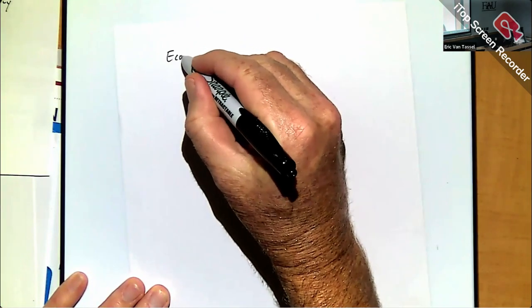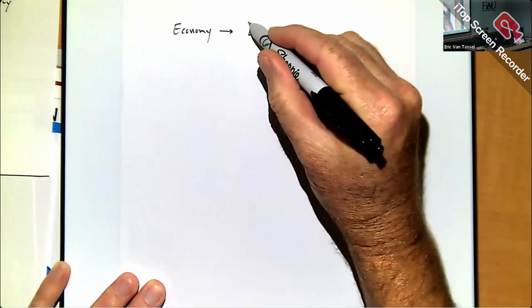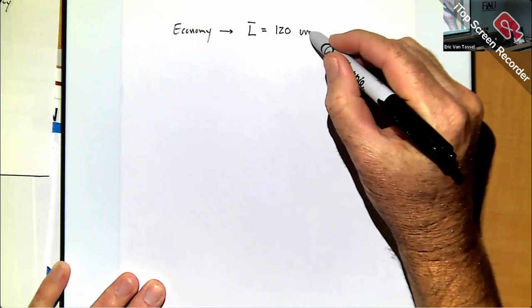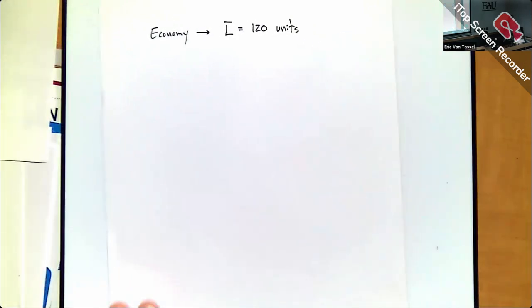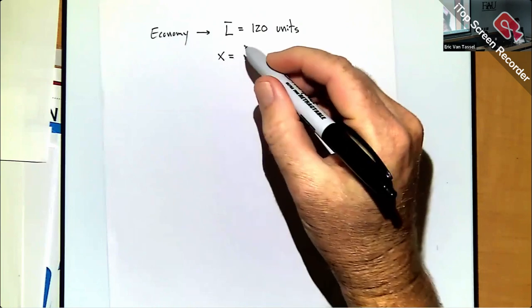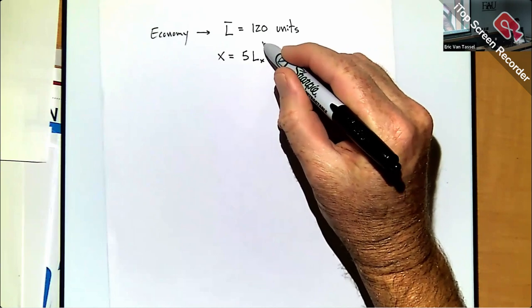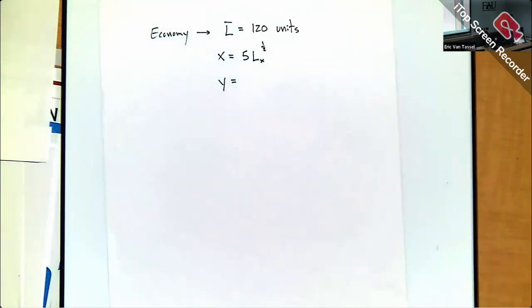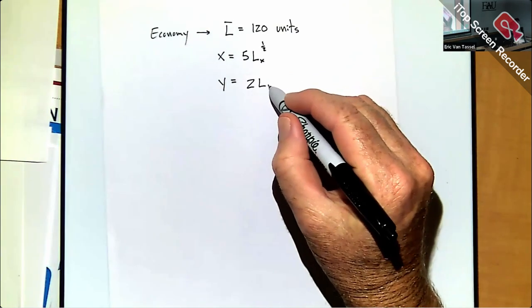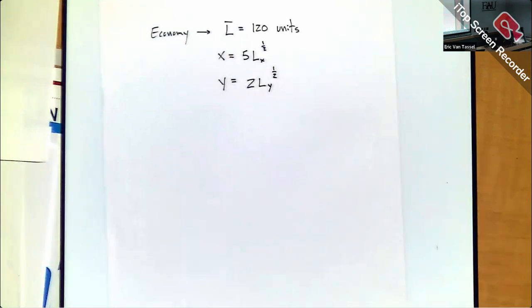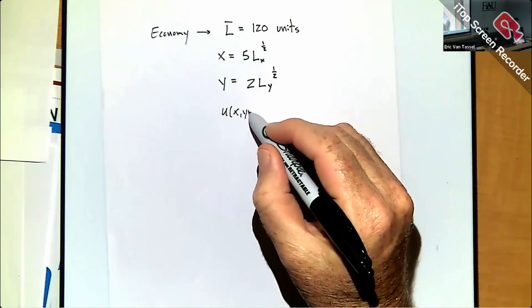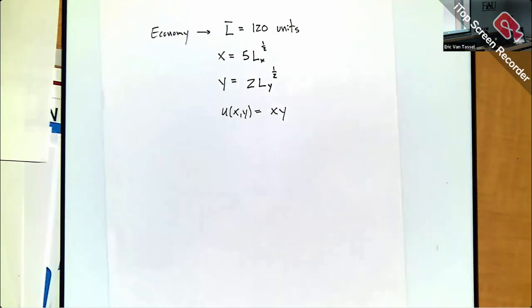Let's look at a setup similar to what we did on Wednesday. The economy has two types of goods and a labor endowment — let's make that 120 units. The production functions are X = 5LX^(1/2) and Y = 2LY^(1/2). For preferences over consumption baskets, we have a simple Cobb-Douglas utility function U = X·Y.